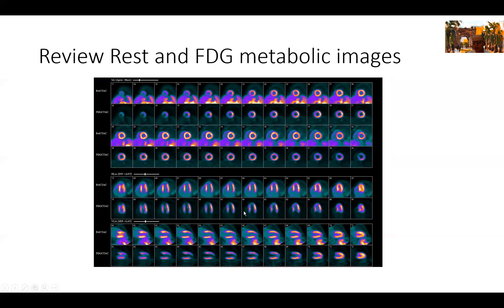Then the next step is to review the rest images with the FDG images. So now we're looking for matched versus mismatched defect. If we have a defect on the rest images that is matched with the FDG images, we have a defect on the FDG images, and that's the hallmark of what we call scar by PET. So we have here a defect in the rest images matched by a defect in the FDG images. No metabolic activity in that segment in the apex, absolutely none. And you can see here this is typical of scar.